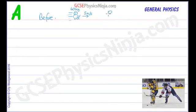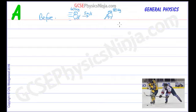He or she is going to bump into another ice hockey player who is stationary, and that ice hockey player is 80 kilograms in mass. So that's our before diagram and we've labelled it up with the information that we know. This is kind of like doing a data list — the listing step whenever we do a calculation.